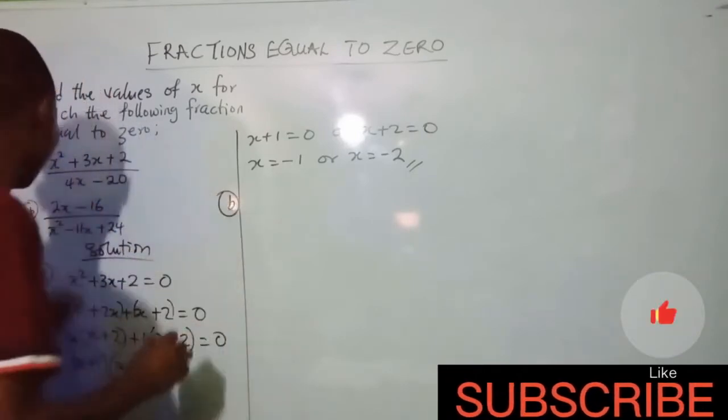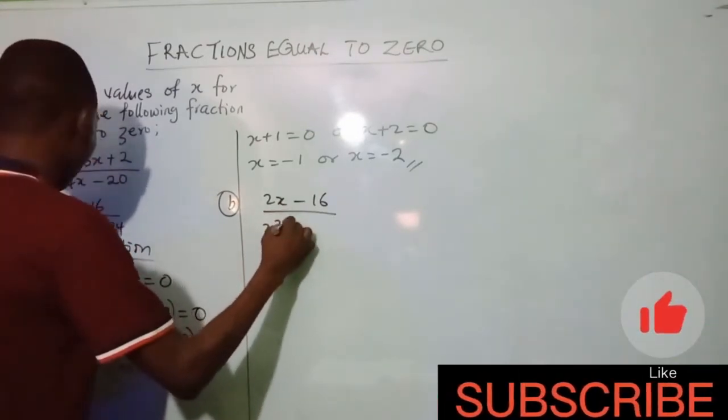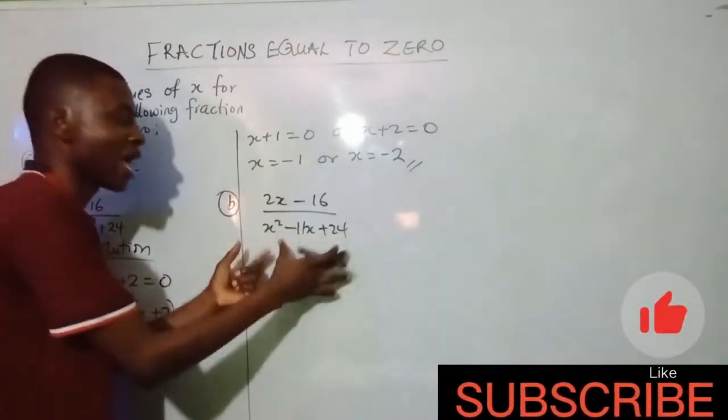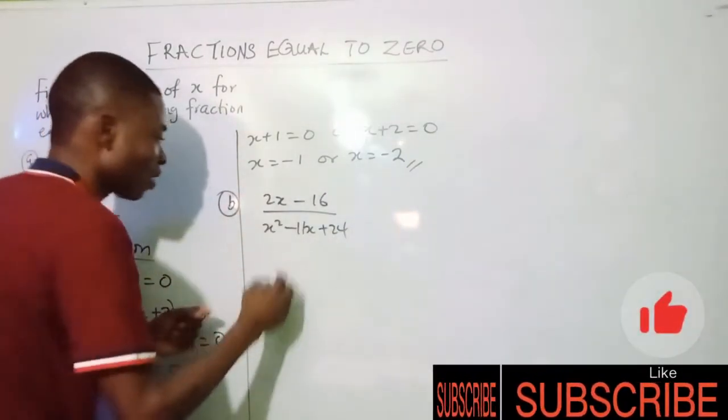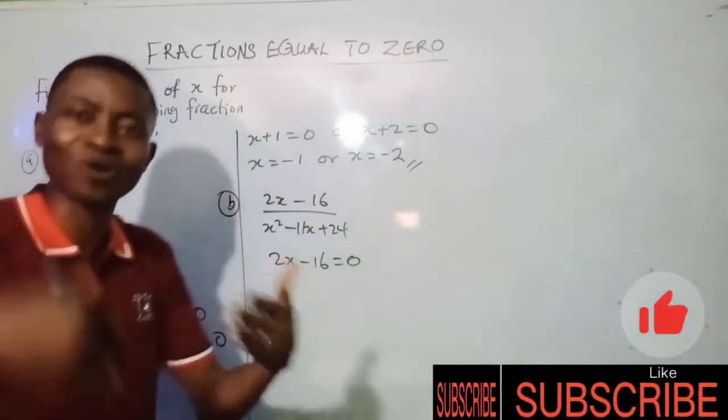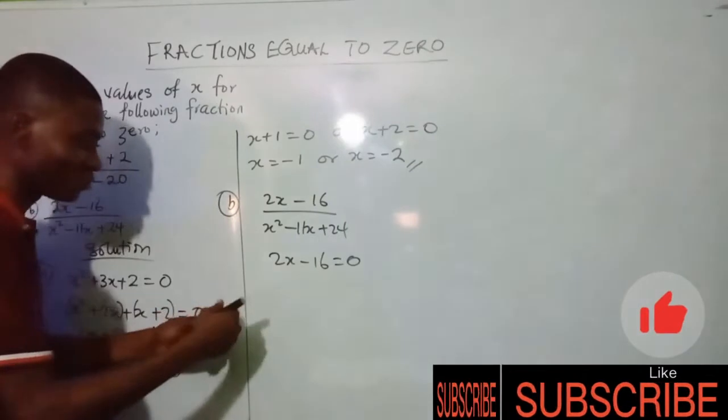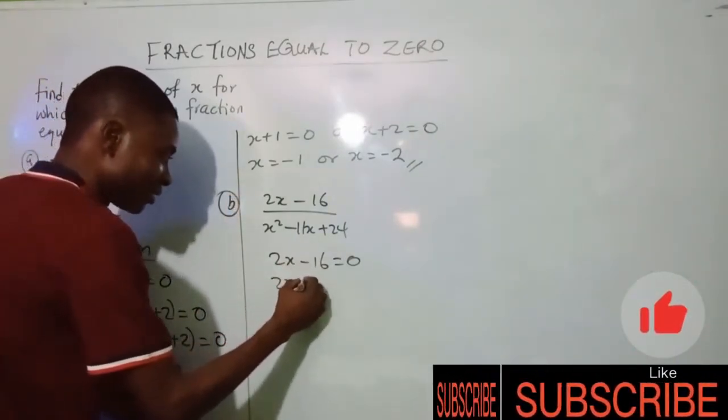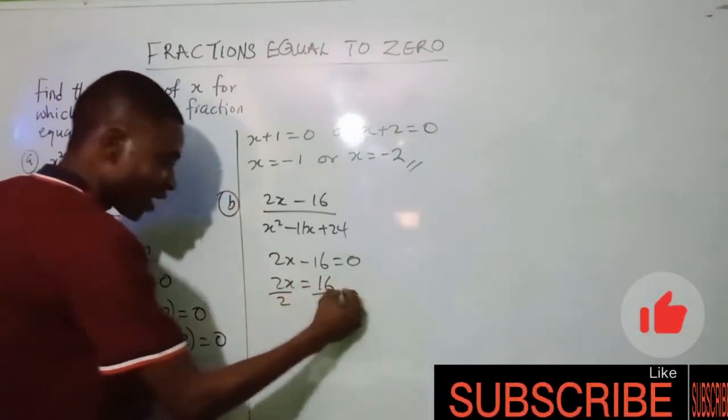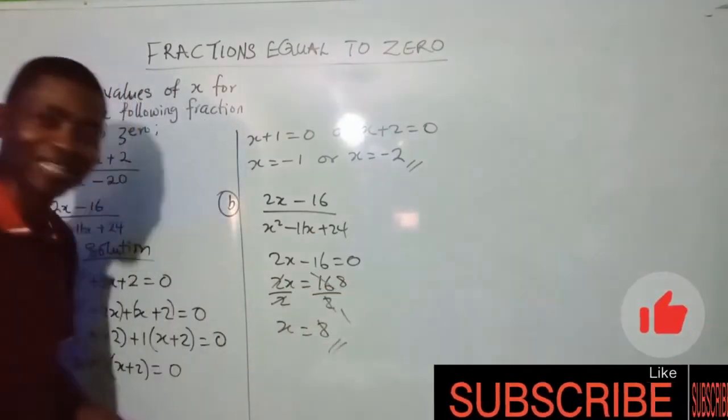Let's check the second one. We have (2x-16)/(x²-11x+24). Again, remember what I said: our attention is on the numerator, not the denominator. So 2x-16=0. Are we factorizing anything here? Not at all. Collecting like terms, 2x=16. Dividing, x=8. And that is the answer. Very simple. Not difficult at all.